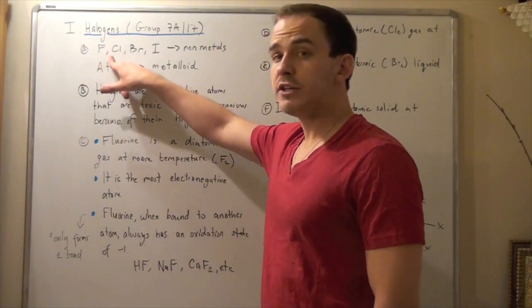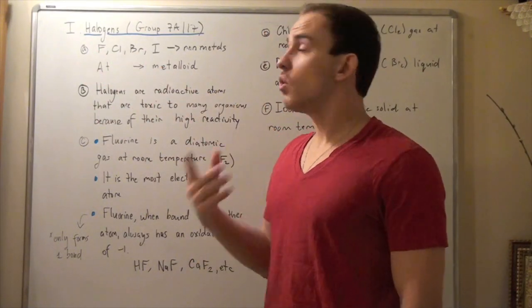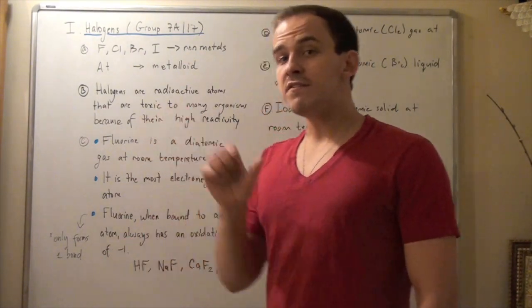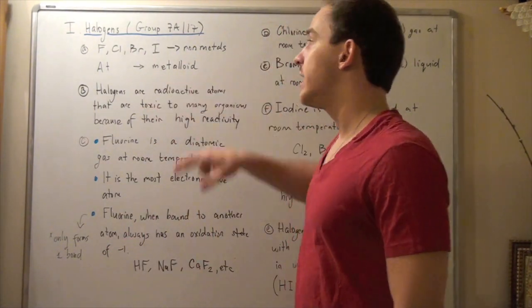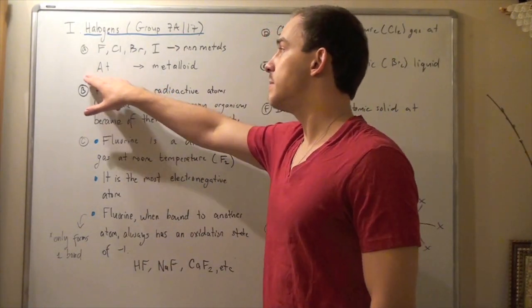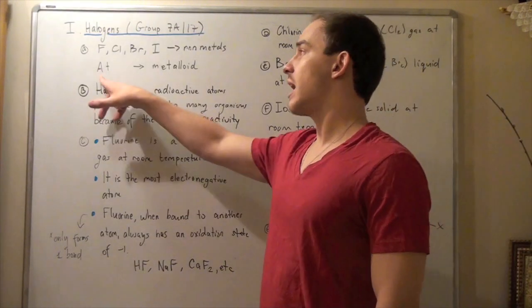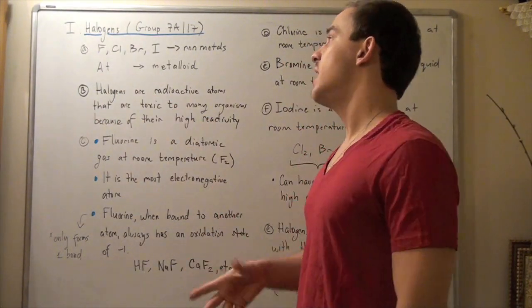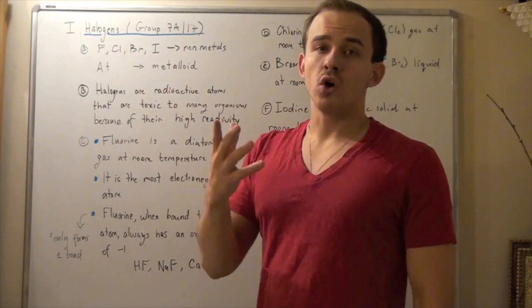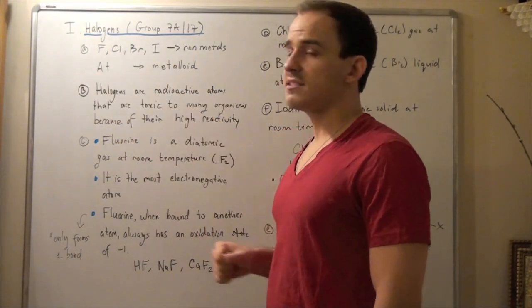Fluorine, chlorine, bromine, and iodine are all very common non-metallic halogens. The fifth halogen, which is a metalloid, is the least common halogen, and that's called astatine with the symbol AT. We're not going to really talk about this guy too much because he's not very common, but you should know that aside from these halogens, there's also the fifth halogen called astatine.